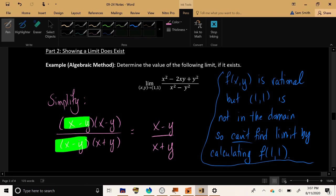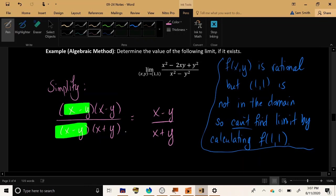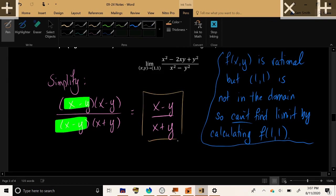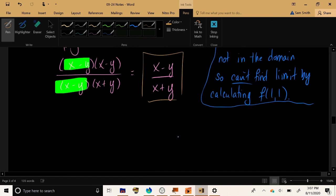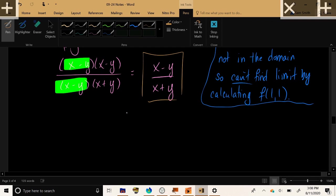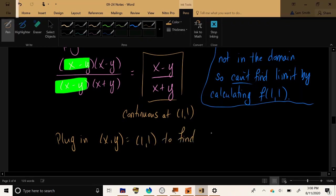Now, because we've eliminated the factor of x minus y in the denominator, if we now try to plug 1 comma 1 into our new rational function, then the function will actually be continuous at that point, because we have removed the factor which originally caused us to divide by 0. This is now continuous at 1 comma 1. So plug in xy equals 1, 1 to find the limit.